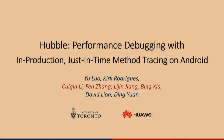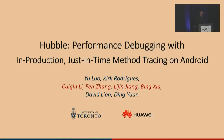Hi, folks. Today, I will share with you a continuous method tracing tool with extremely low overhead called Hubble. It's frequently used to debug intermittent performance problems on Android devices in production, and it is shipped on all supported and upcoming Android phones from Huawei in China.